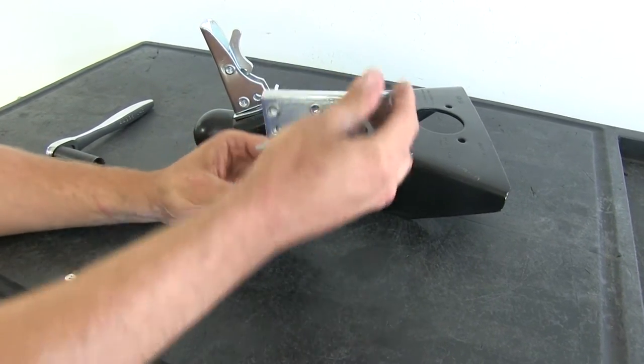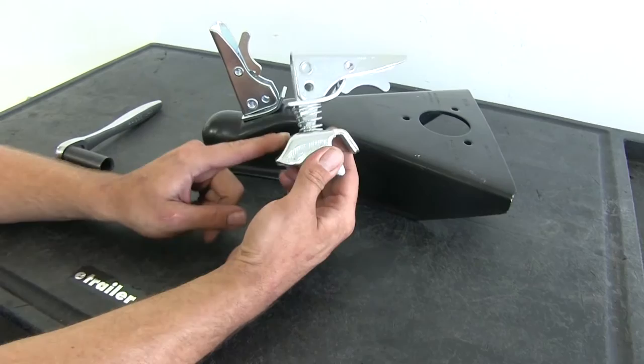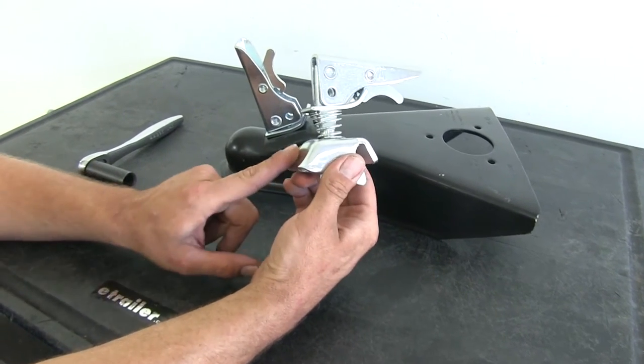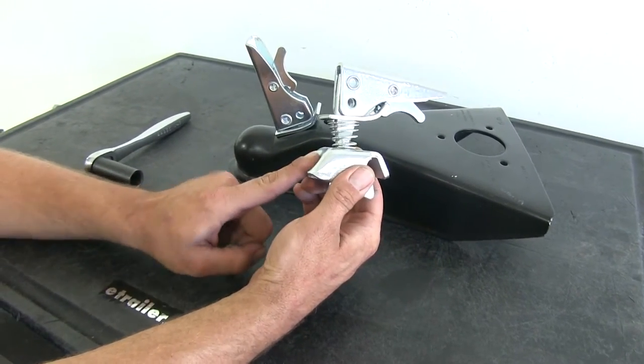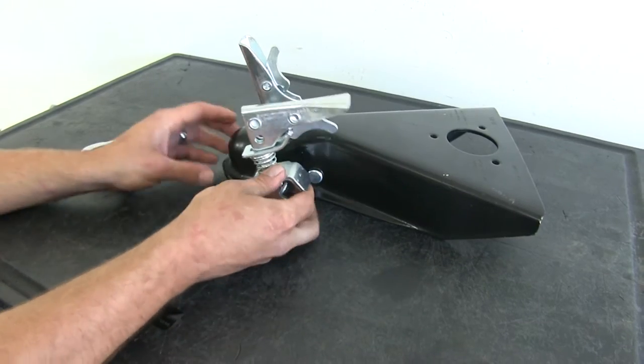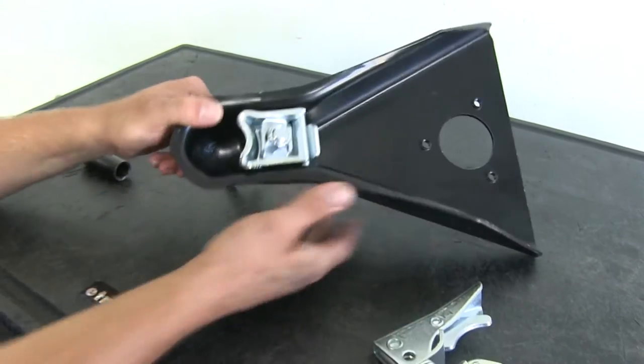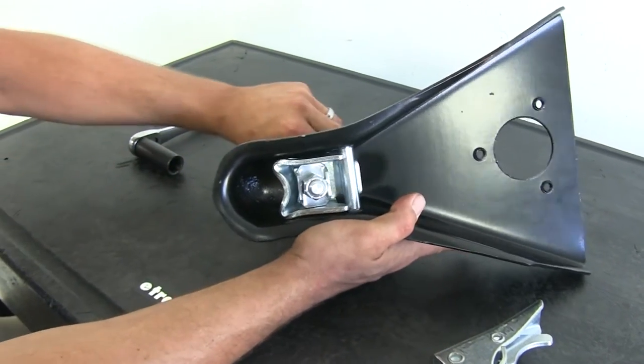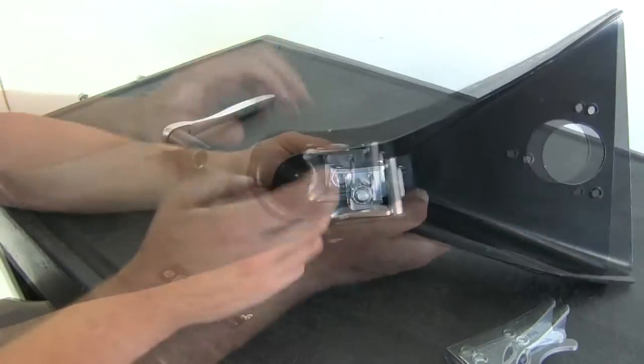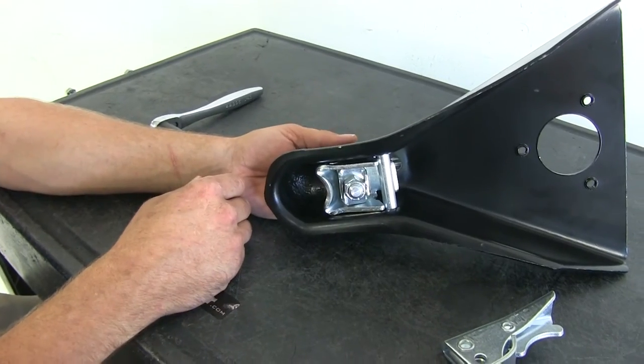Our latch goes in there, that's what's going to hold it down. And our ball, it's going to sit right in this little recessed area, this little dented area, just like that. So that captures that ball right up here in the front. You can kind of see how it works there. That's going to keep everything nice and tight as we head down the road.